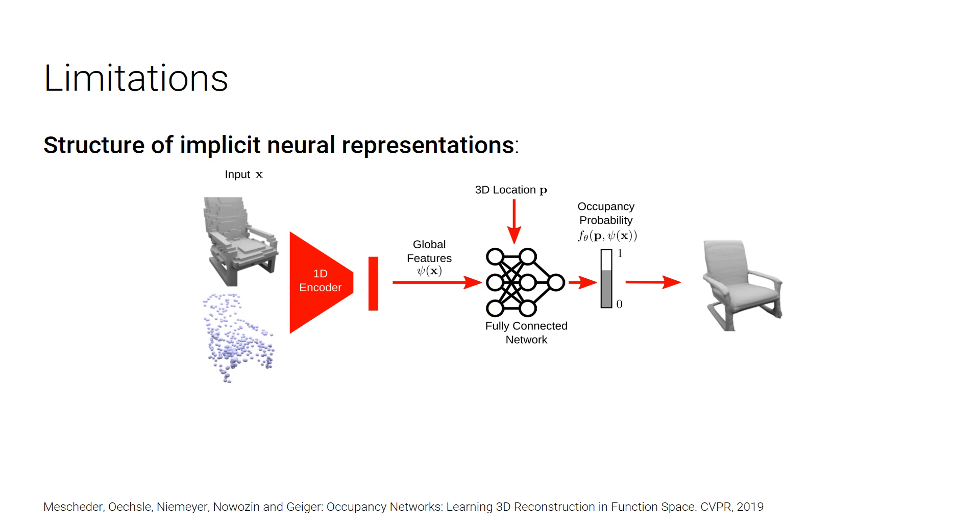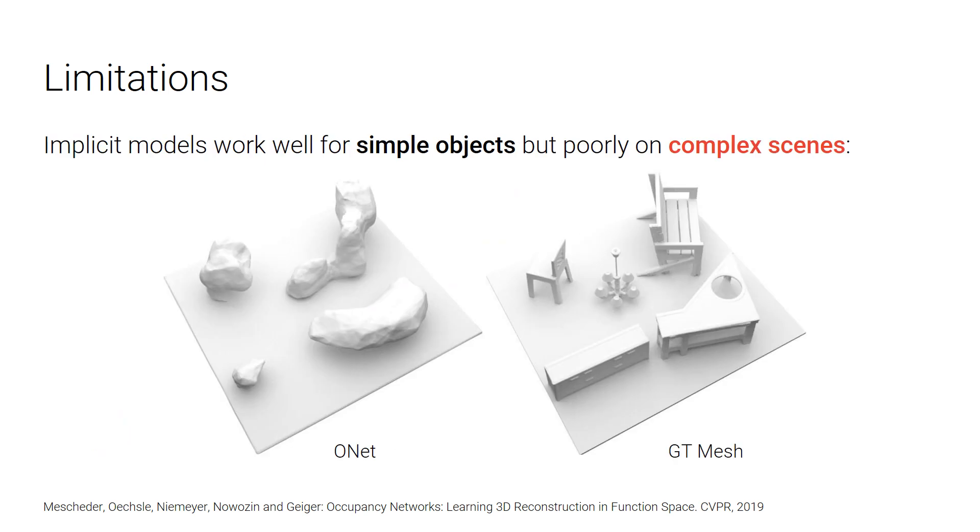The occupancy network encodes the input into a global feature, and then a 3D sample point is fed into a fully connected network to predict its occupancy given the global feature. However, the global latent code here does not capture local information in the input, which leads to overly smooth geometry. What's more, a vanilla fully connected network is used to represent possible shapes, which does not exploit, for example, translational equivalence properties that are present in many input domains. As a consequence, the implicit model works well for simple objects, but poorly on complex things, as we can see here.